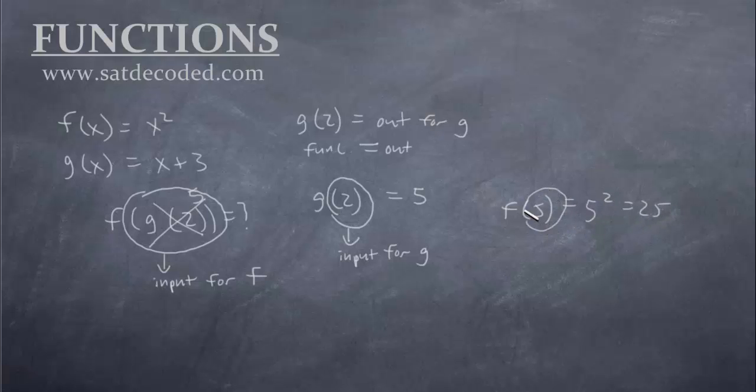Now this 5 right here is an input for f. And this 25 right here is an output for f. I hope that makes sense. Good luck, and I'll see you in the next video.